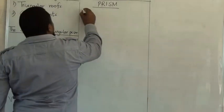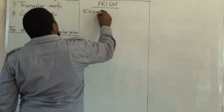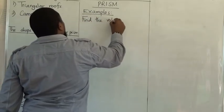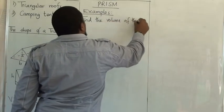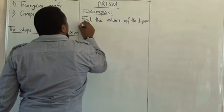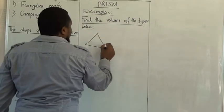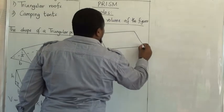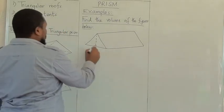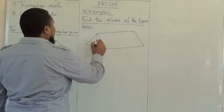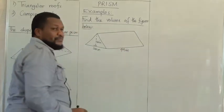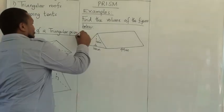Let's talk about examples of the same. Find the volume of the figures below. The first figure I have here, I'm going to have my base as 20 centimeters, the height as 35 centimeters, and my length as 49 centimeters. This is the figure that we have, our number one example.